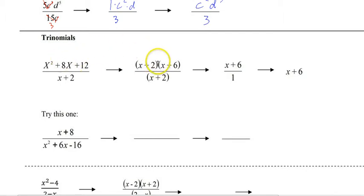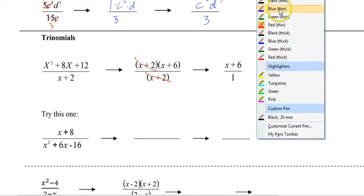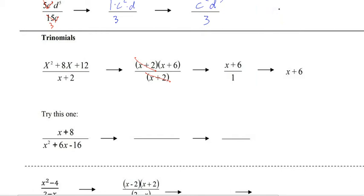So we factor the top, just write the bottom one in a parenthesis and now we can cancel them off. And there's your answer.